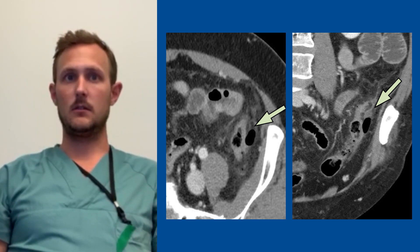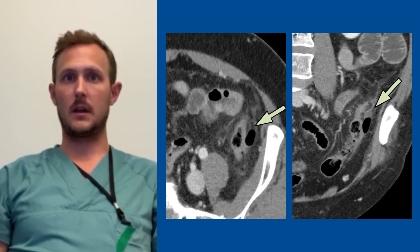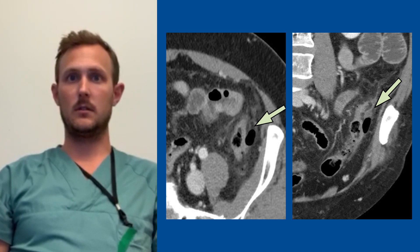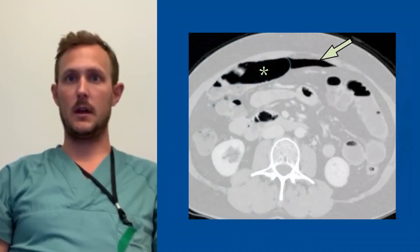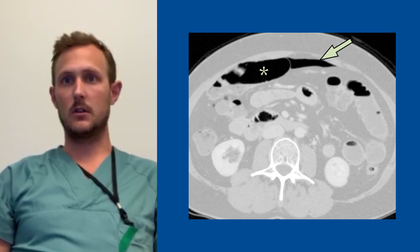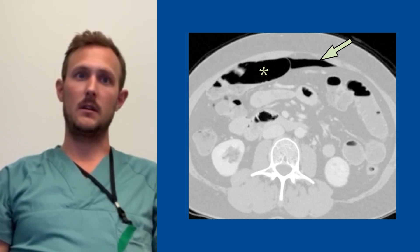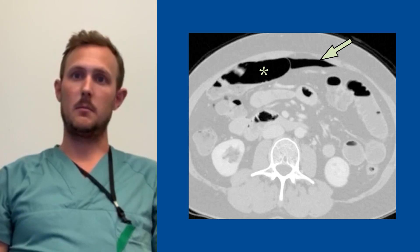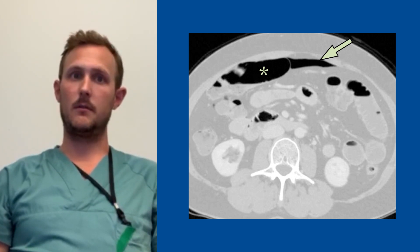In addition to diverticula, wall thickening, and pericolic fat stranding in the sigmoid colon, the CT also revealed extraluminal air in close relation to the sigmoid and free abdominal air in distance to the sigmoid, consistent with perforated diverticulitis. As the patient was in good clinical condition, we decided for conservative treatment with intravenous antibiotics. The patient was released in good health five days later.